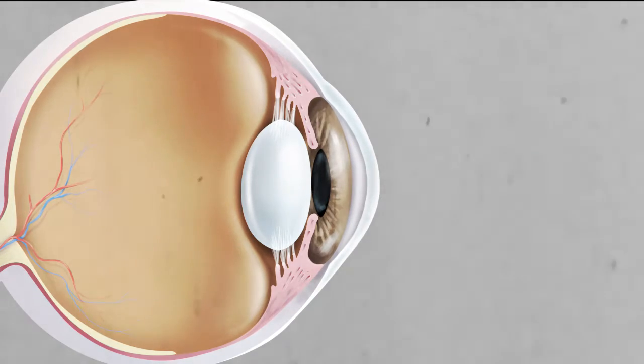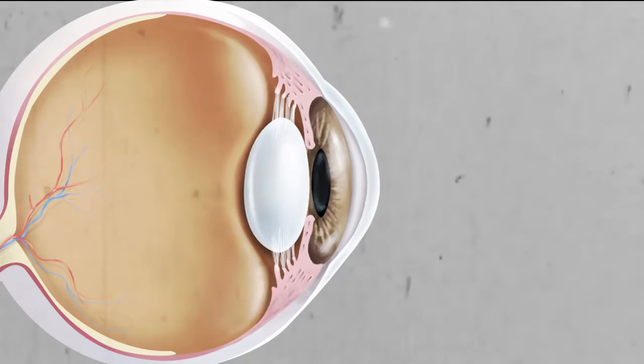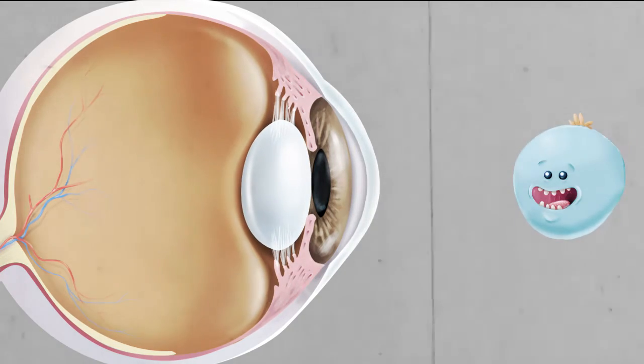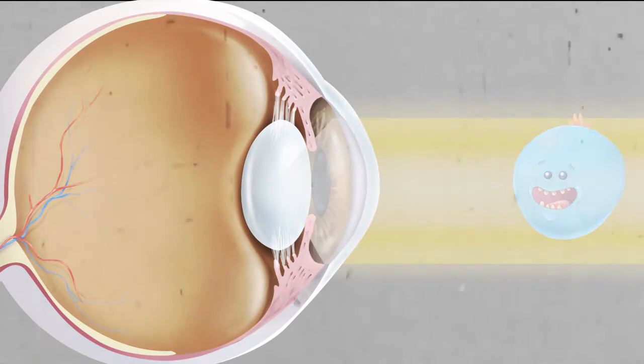That's right, the lens is an elastic structure, kind of like a rubber band. Look at me! When light enters the eye through the pupil, the lens focuses light to form an image of the object on the retina in the back of the eye.